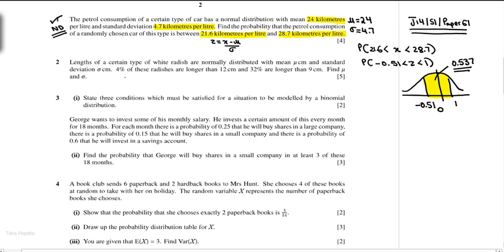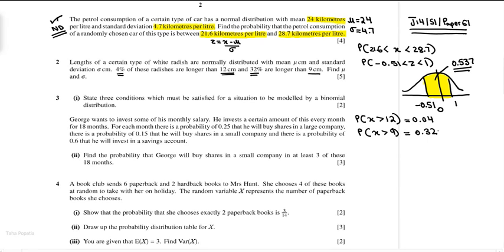Four percent are longer than 12, so: probability X greater than 12 equals 0.04. The second condition given is that 32% are longer than 9, meaning probability X greater than 9 equals 0.32. These two conditions are what you use to calculate — going from X to Z, drawing a sketch, and reading off values.